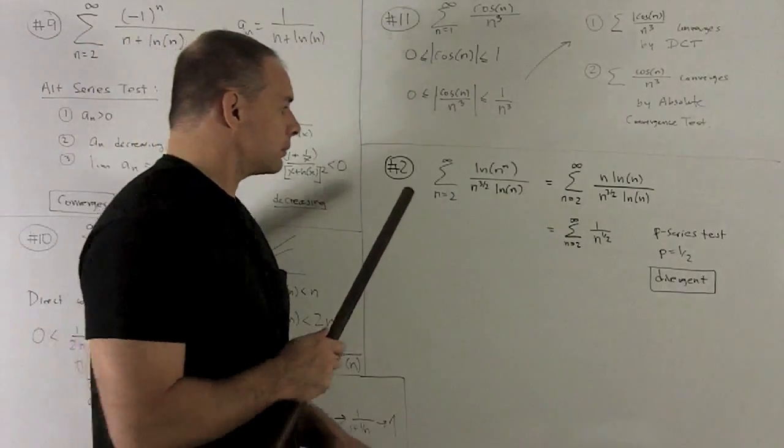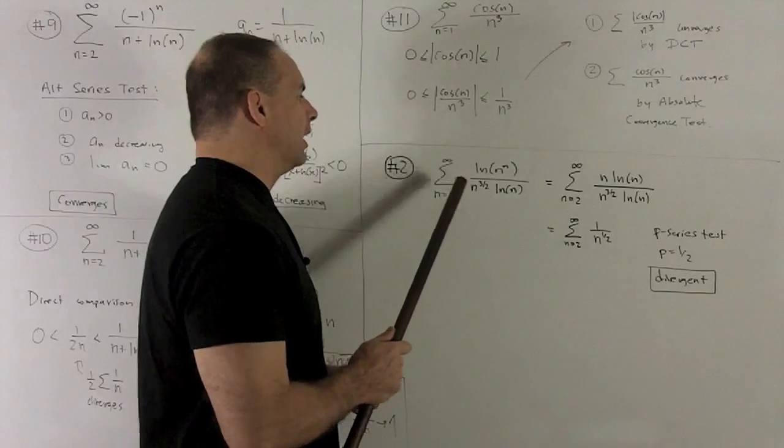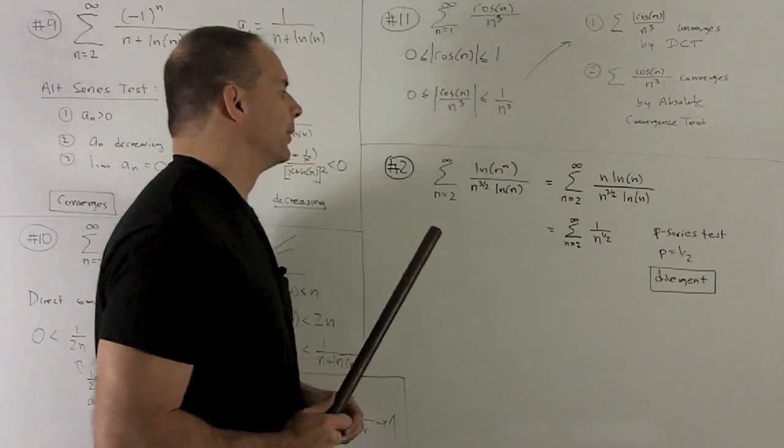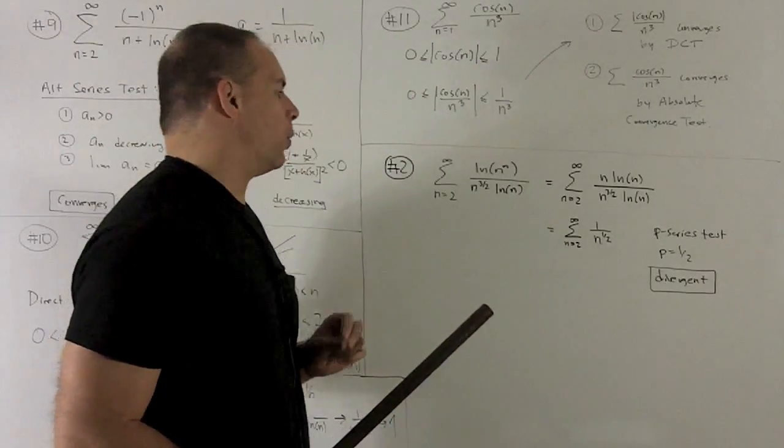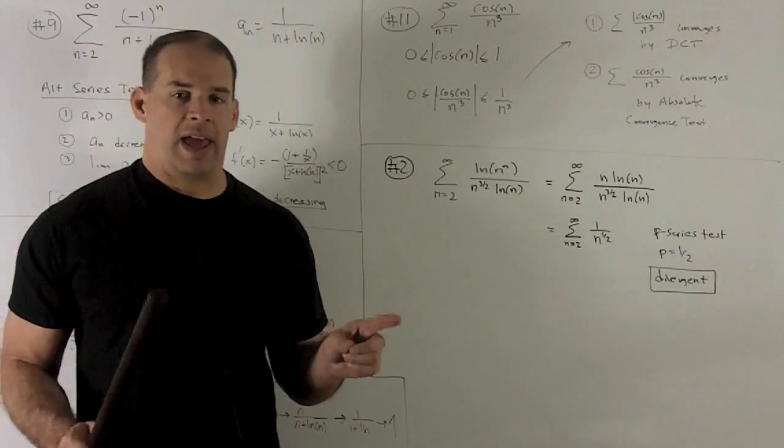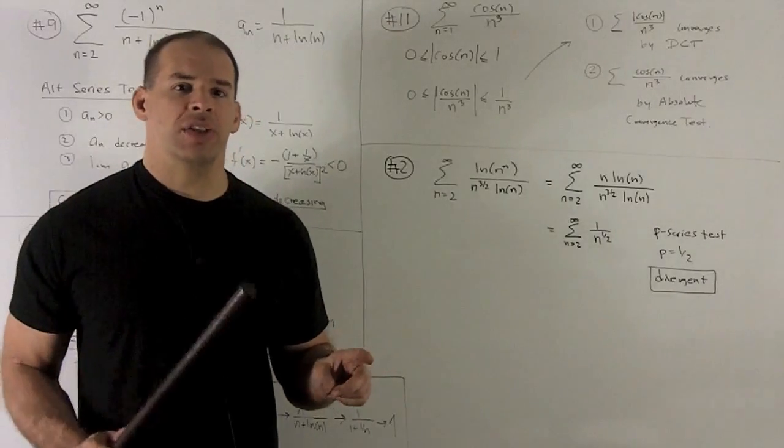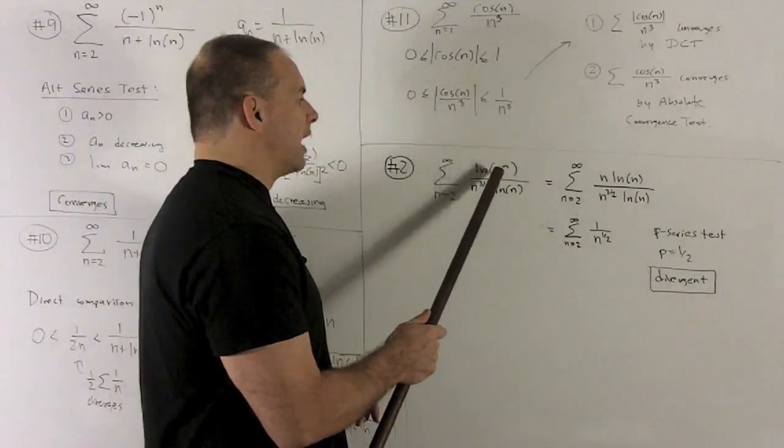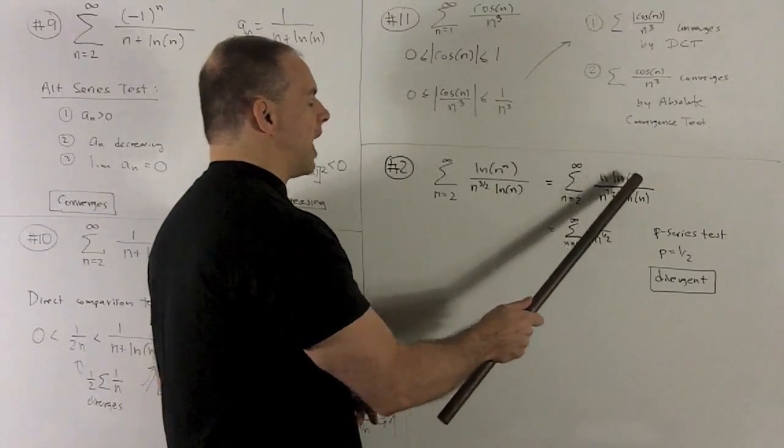Number 12. Last one. We're looking at the sum from 2 to infinity, natural log of n to the n, n to the 3 halves, natural log of n. Looking at this, I'm not seeing anything gel immediately, but I can clean up one little piece. Before, we had natural log of n raised to the nth power, function inside, power of n. Here, the n is on the inside, so I'm allowed to move that out to the front. So, natural log of n to the n is going to be equal to, take the exponent and put it in front, n natural log of n.